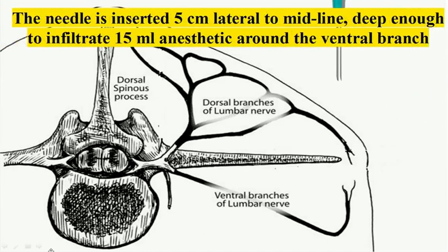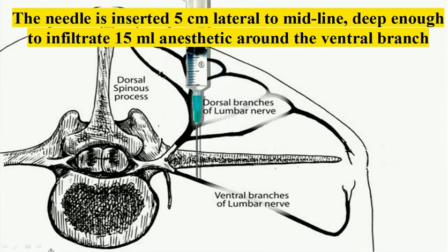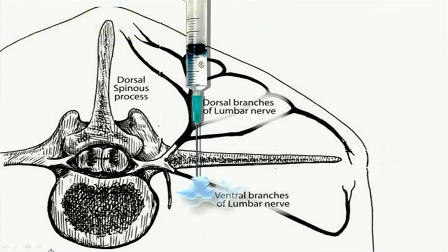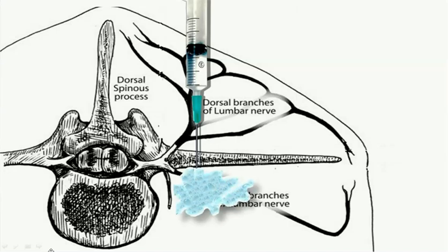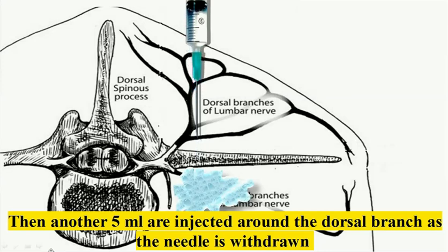For each nerve, the needle should go deep enough to reach the ventral branch of the nerve, around which 15 ml of analgesic solution should be injected. Another 5 ml should be infiltrated during withdrawing the needle, to block the dorsal branch.